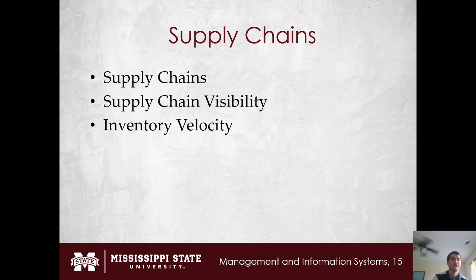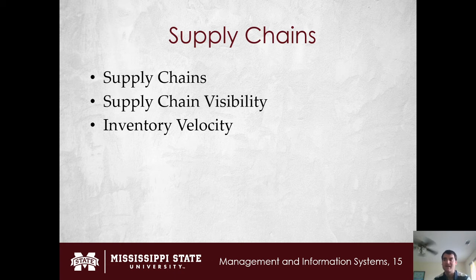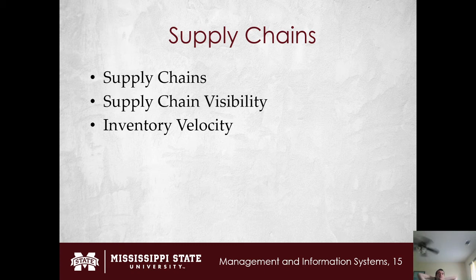Inventory velocity refers to how fast inventory is turned over across the supply chain. Perishable goods — especially organically grown items without preservatives — have very rapid inventory velocity. Non-perishable items can have a much slower velocity and be fine. The goal is to avoid having any waste inside the supply chain.